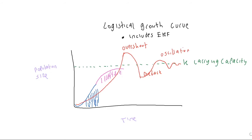This is also why it's so bad when humans impact forests — several species have taken generations to find their perfect population set point, and when you tamper with the environment, you tamper with the resistance factors each species faces. On the outline there's a section for a predator-prey graph, but we're going to hold off on that for now.